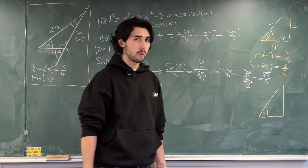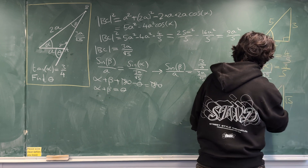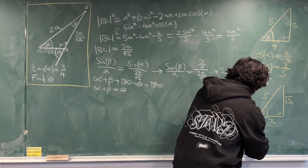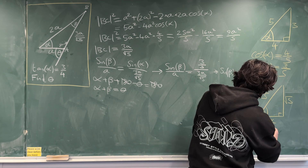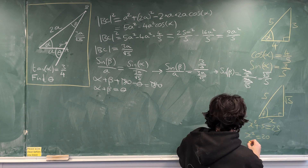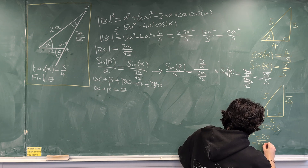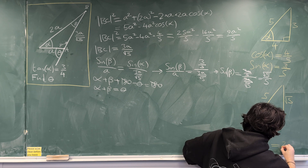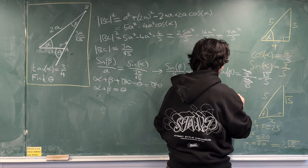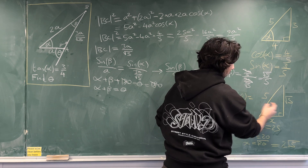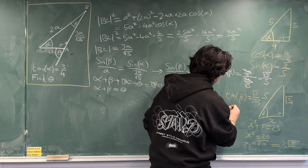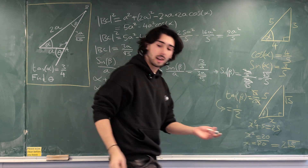Since sin(beta) = √5/5 and sine is opposite over hypotenuse, the opposite side is √5 and the hypotenuse is 5. Using Pythagoras: x² + (√5)² = 5², so x² + 5 = 25, meaning x² = 20, so x = √20 = 2√5. Now, tan(beta) = opposite over adjacent = √5 / (2√5), so the √5's cancel and tan(beta) = 1/2.